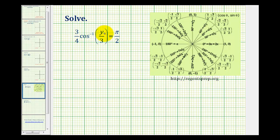We want to solve the following equation for y. Let's start by isolating the inverse trig function. So let's start by multiplying both sides of the equation by four thirds, which is the reciprocal of three fourths.